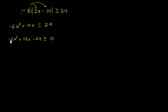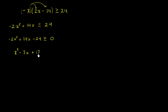I don't like having this negative 2 out front, so I want to divide both sides by negative 2. I can't just divide the left-hand side — I have to divide the right-hand side as well. And any time I multiply or divide both sides of an inequality by a negative number, it's going to flip the inequality. So dividing both sides by negative 2, I get x squared minus 7x plus 12, and the inequality flips to less than or equal to 0.